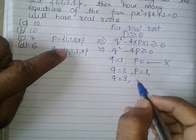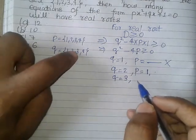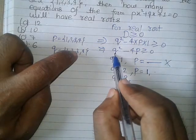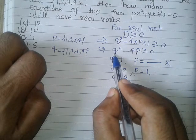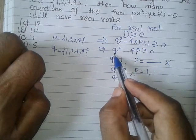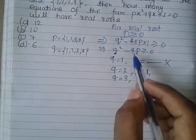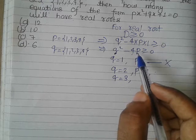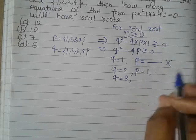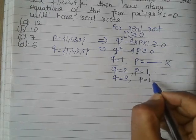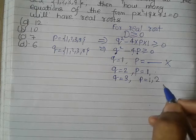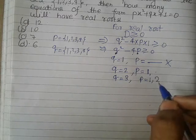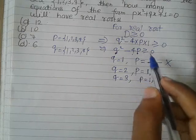Now let's take Q = 3. Q² = 9. We need 4P ≤ 9, so P can be 1 (giving 4) or 2 (giving 8), both of which are ≤ 9. P = 3 gives 12, which does not satisfy the condition. So Q = 3 gives 2 valid equations.